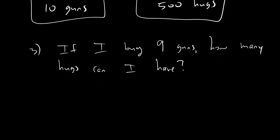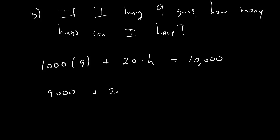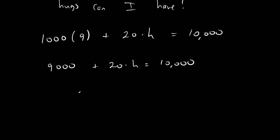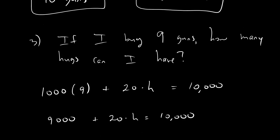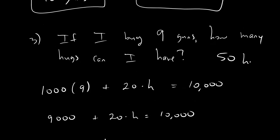Last question is, if I buy 9 guns, how many hugs can I have? And this is the exact same idea. We plug this into the equation. 1,000 times the number of guns plus 20 times the number of hugs equals 10,000. This is 9,000 plus 20h equals 10,000. Solving this puppy, bring the 9,000 over to the other side. We get 20h equals 1,000. And now, divide by 20. And how many hugs we get is 50. 9 guns, 50 hugs. That sounds like a thing. 9 guns, 50 hugs. Maybe a band name.